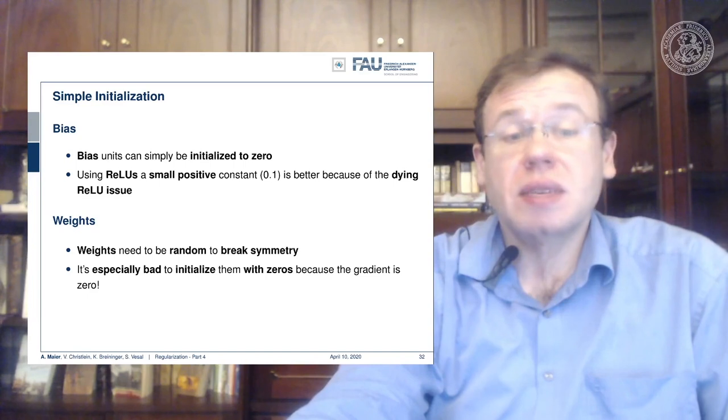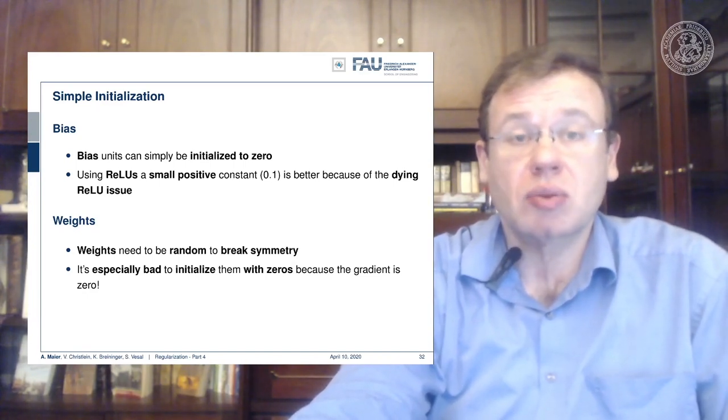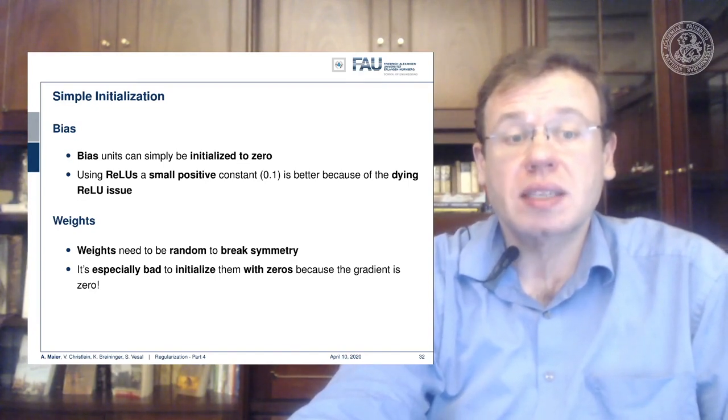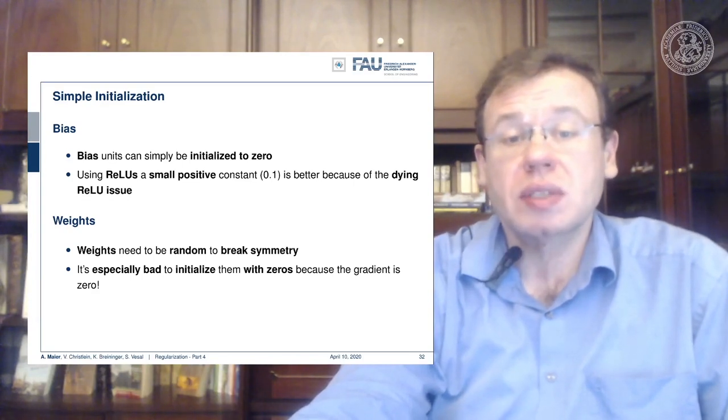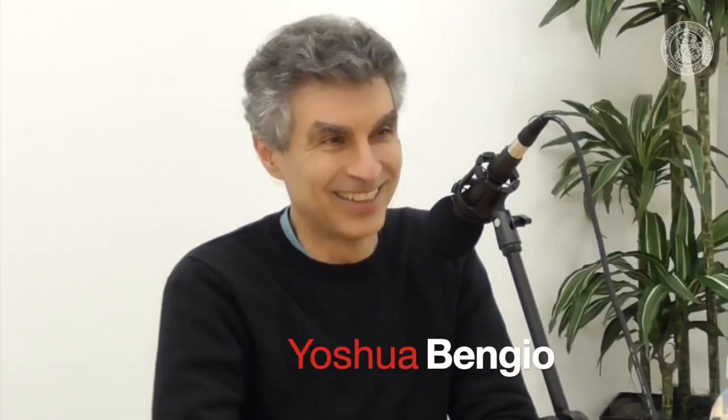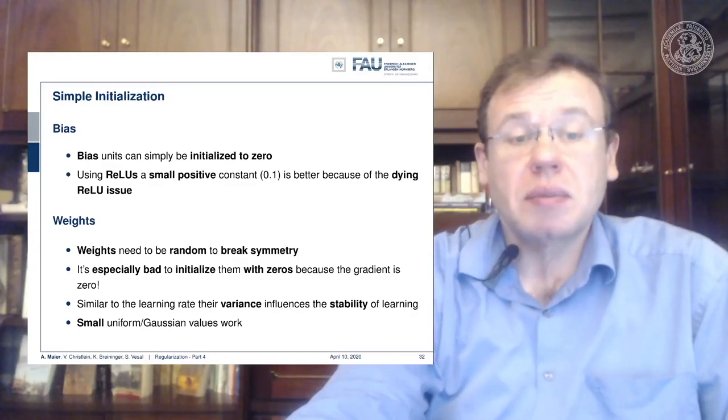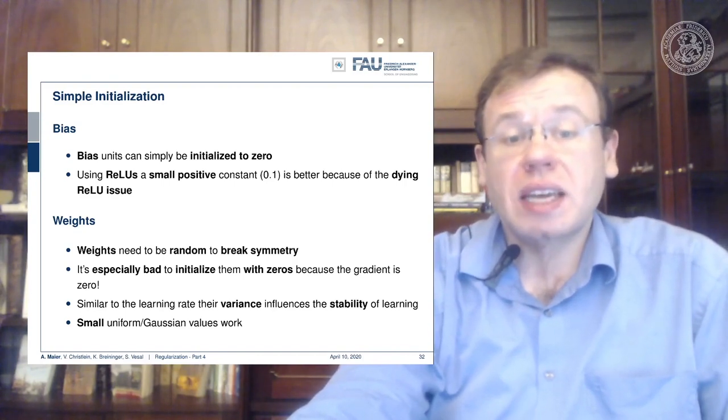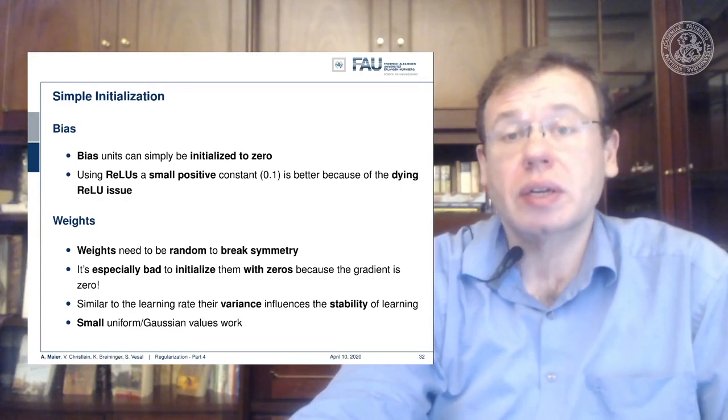For the weights, the weights do need to be random to break the symmetry. We already had this problem in dropout that we need additional regularization in order to break the symmetry. And it would be especially bad to initialize them with zeros because then the gradient is zero. Similar to the learning rate, their variance influences the stability of the learning process. So small uniform Gaussian values work.